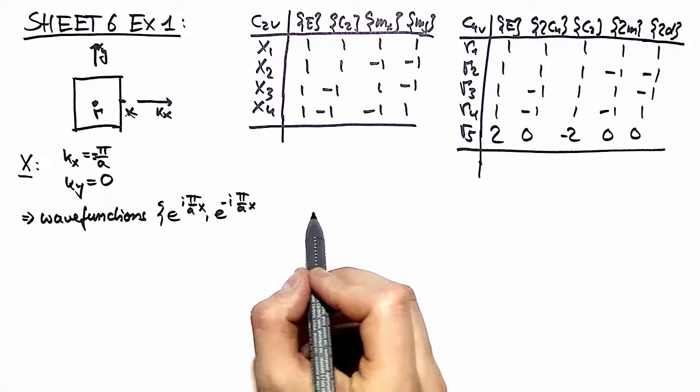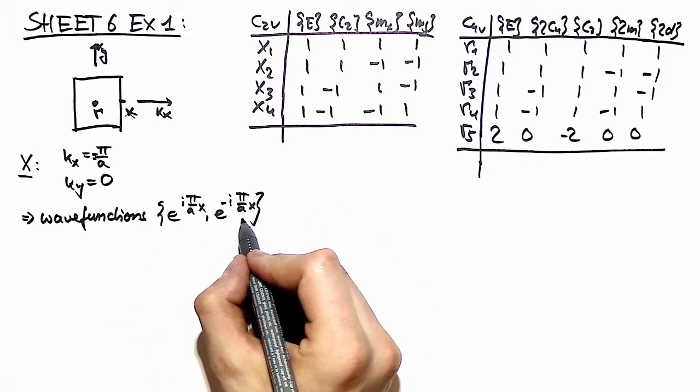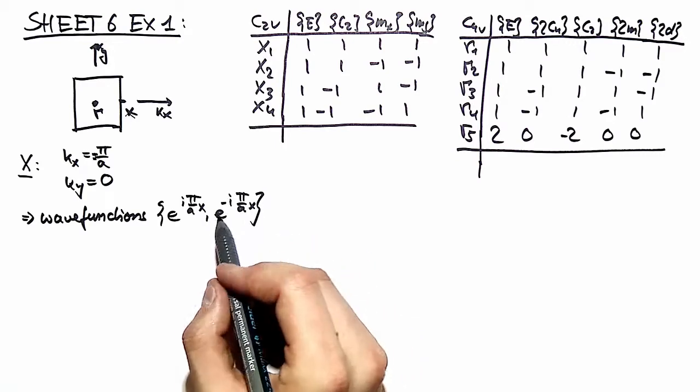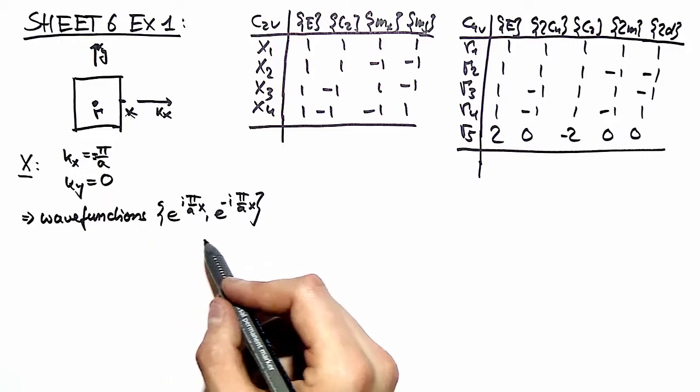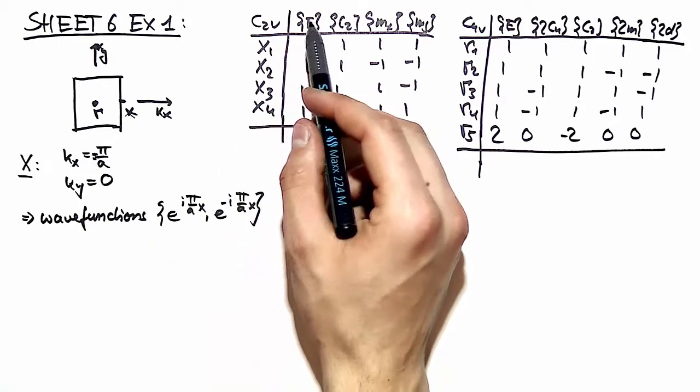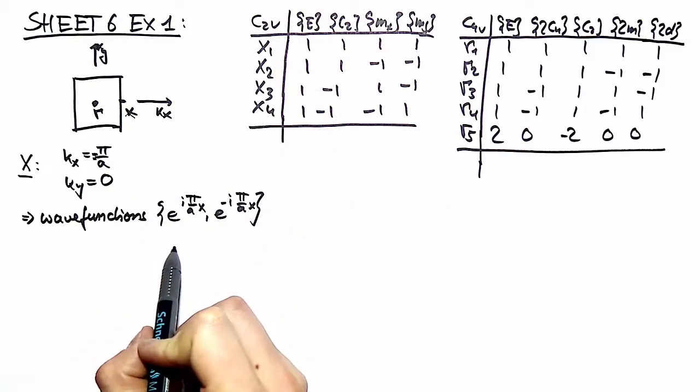This basis is a basis for our two-dimensional representation as I said, and we want to check how these basis vectors transform under our group operations over here to construct matrices and determine the trace of these matrices.